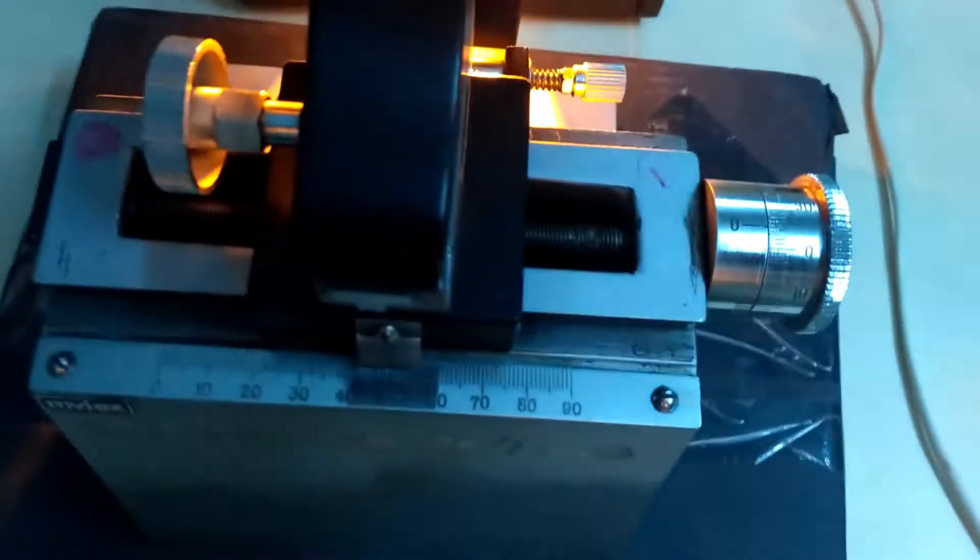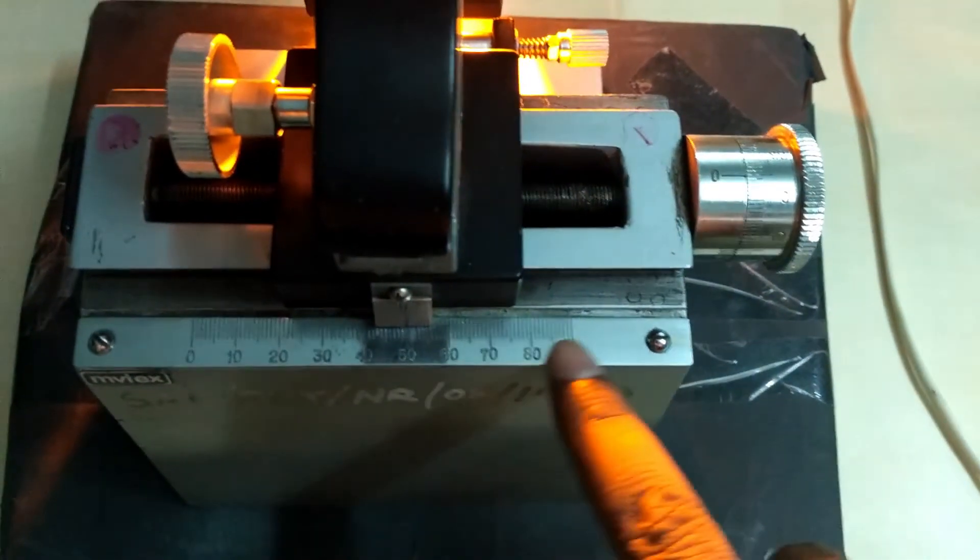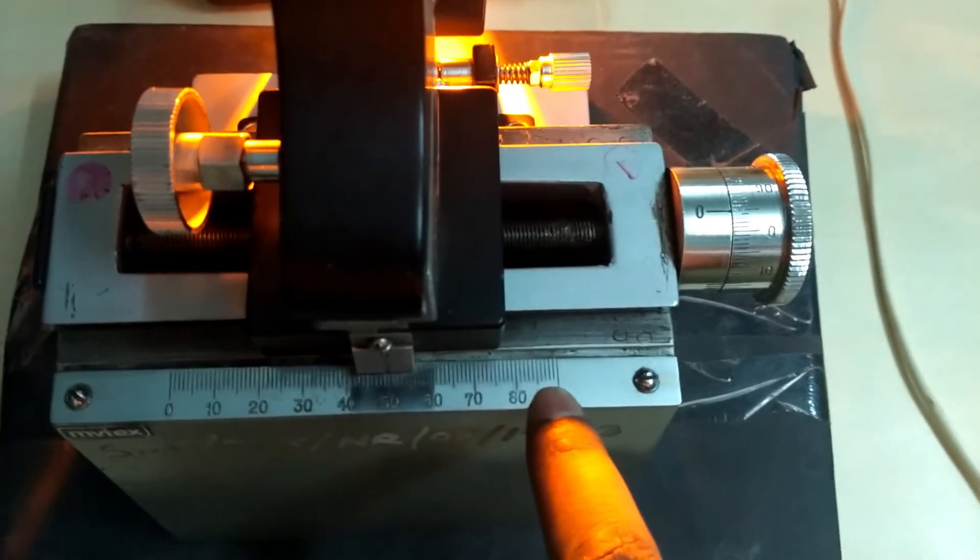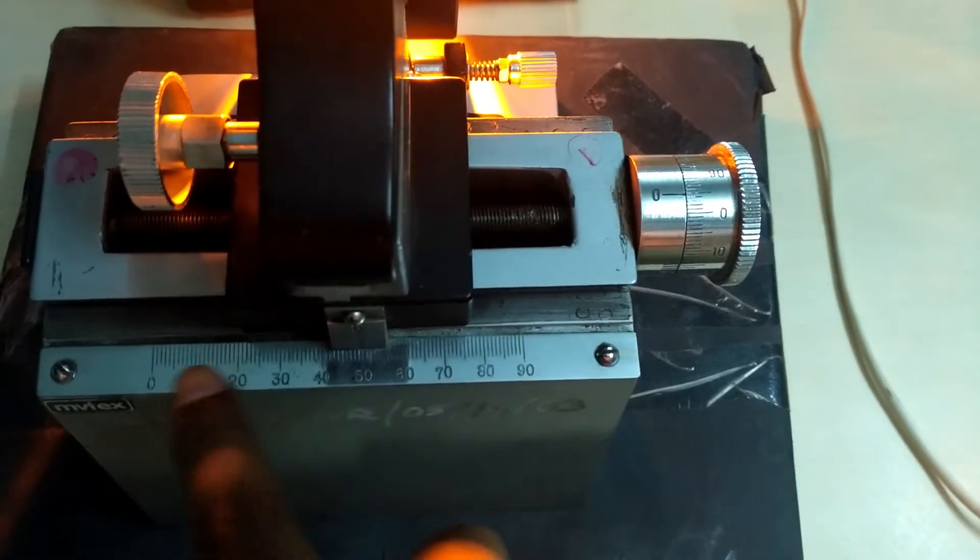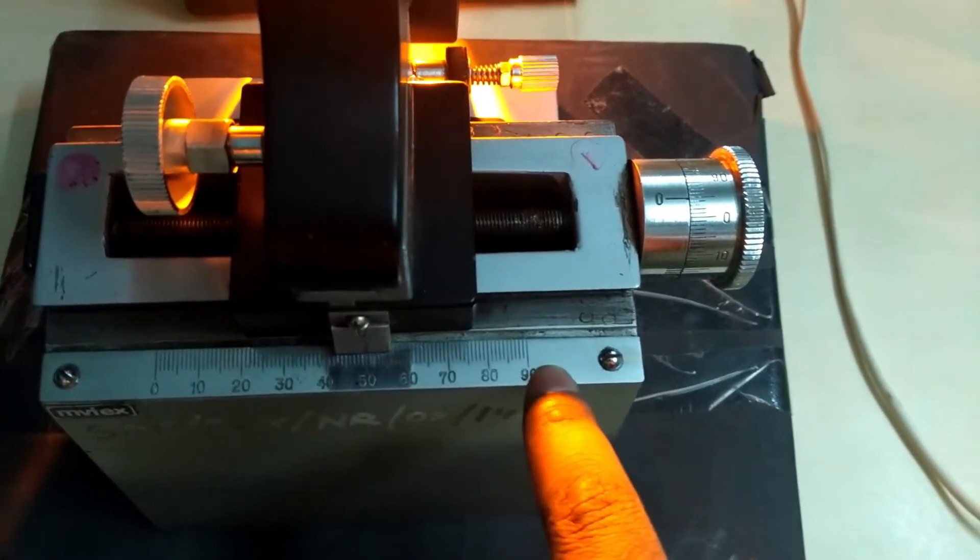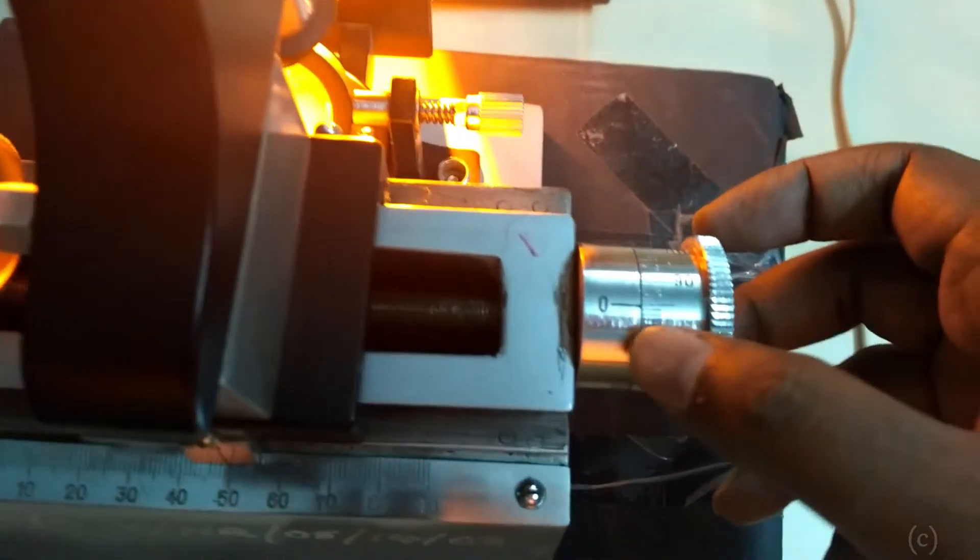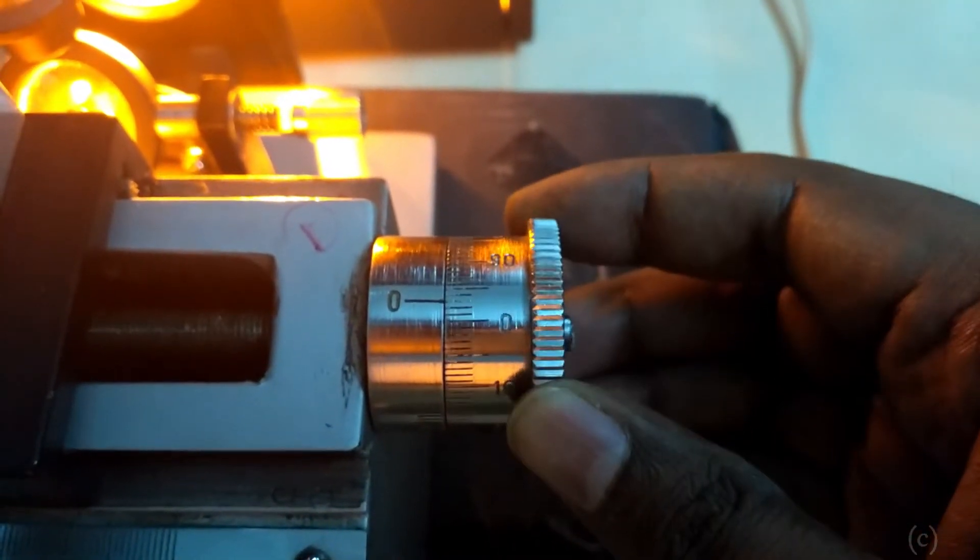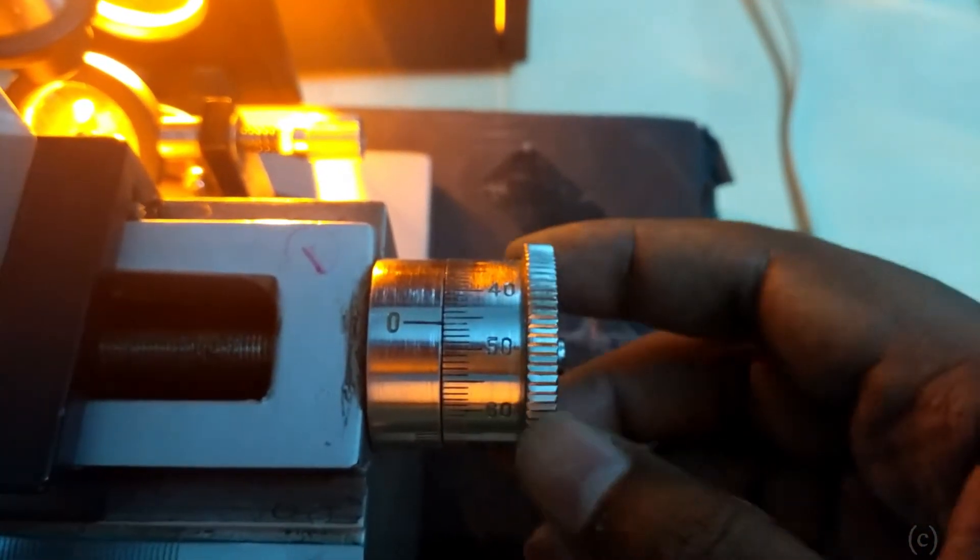Scale arrangement is there. You can see the scale is the main scale. Main scale is having smallest division 1 mm, 0 to 90 mm, this is 1 cm and this is 9 cm. So there is a circular scale, circular scale is having a 0 mark here and there are 0 to 100 divisions.